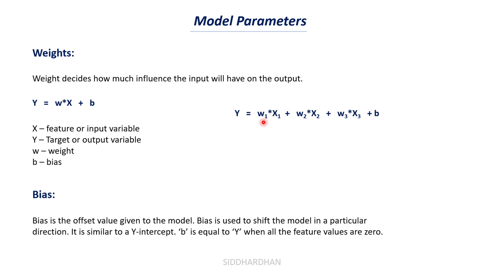The weight w tells you how important each input is — w1 tells how important x1 is, w2 tells how important x2 is, and so on. We also have bias value b. x is our feature or input variable and y is our target or output variable. Bias is the offset value given to the model — it's the intercept in linear regression — and is used to shift the model in a particular direction, similar to a y-intercept. b equals y when all feature values are zero.